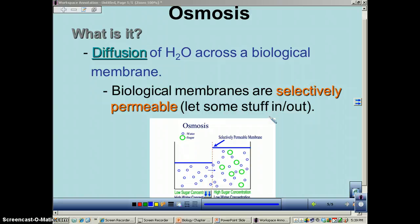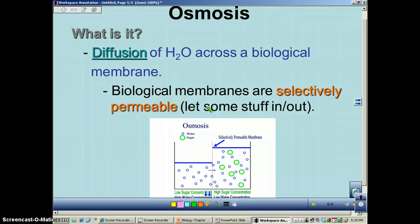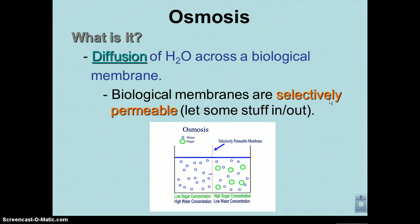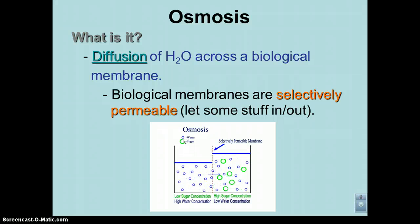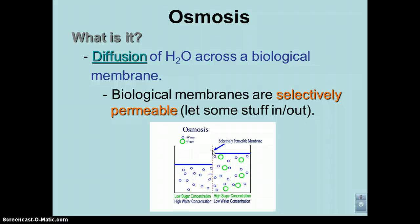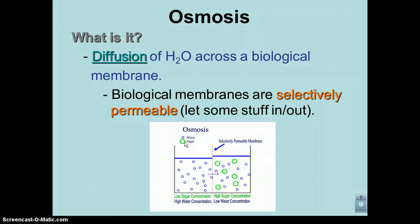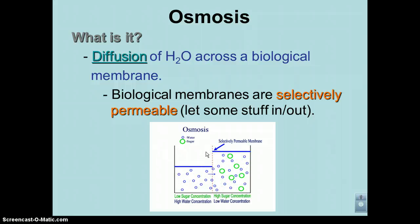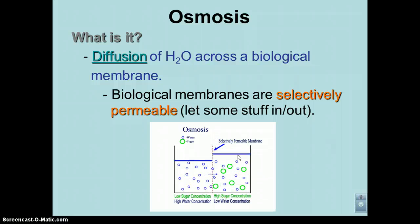Selectively permeable means some stuff can get in and out, others can't. Small molecules can get through; big molecules cannot. In this animation, water molecules are very small — the small blue circles. The membrane has little pores, like the channel proteins we saw in the previous podcast. The big green circles are sugar molecules — C6H12O6 — large molecules that can't fit through the little holes. Osmosis is trying to reach equilibrium, and the best it can do is add water to the inside of the cell.